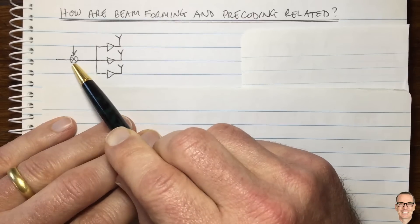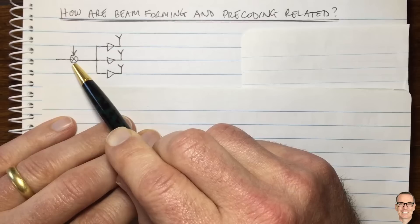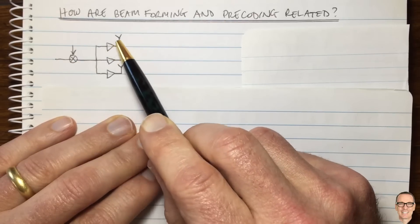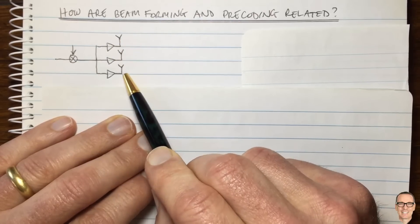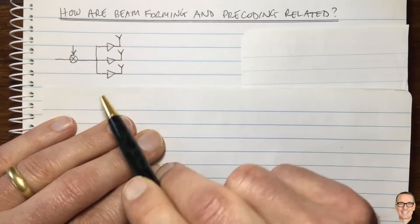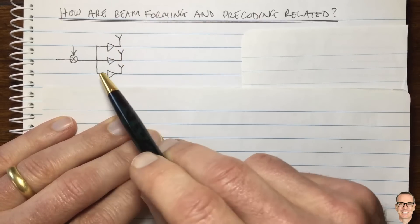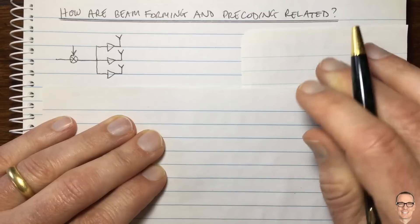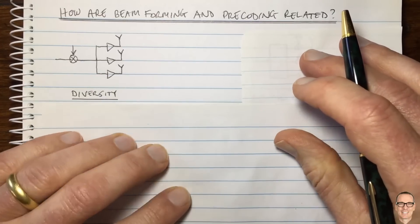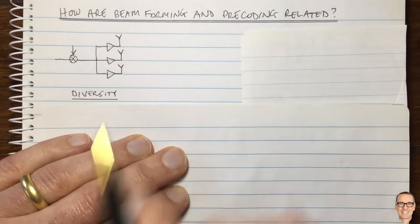We have a mixer to take our signal up to the carrier frequency and then we have three antennas with their own amplifiers. In this formation, it's simply a case of having diversity.